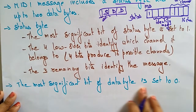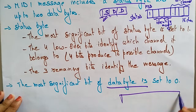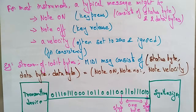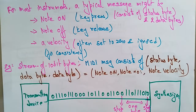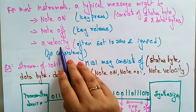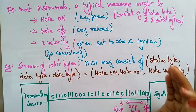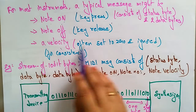The most significant bit of the data byte is also set to one. For most instruments, a typical MIDI message might consist of Note On, Note Off, and velocity. Whatever instrument you are using, if you want to communicate via MIDI, a typical message consisting of Note On, Note Off, and velocity is transferred, and it consists of a status byte and two data bytes.